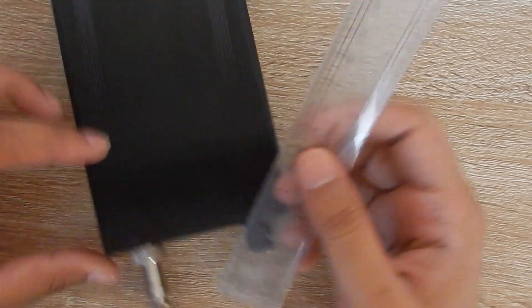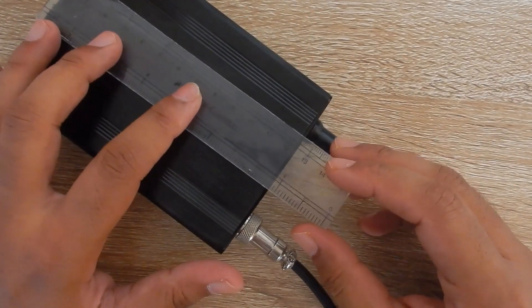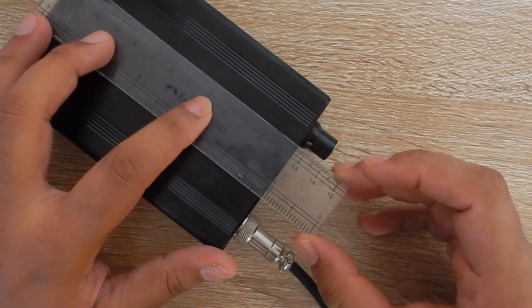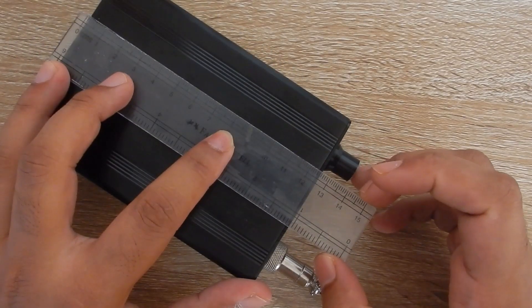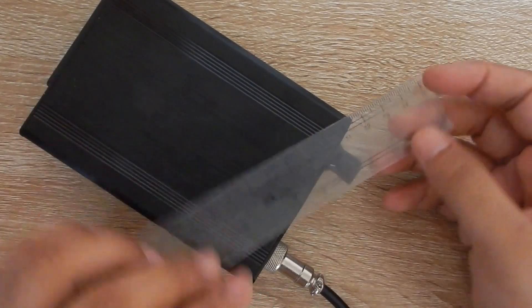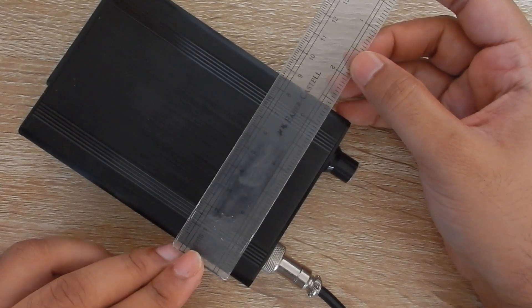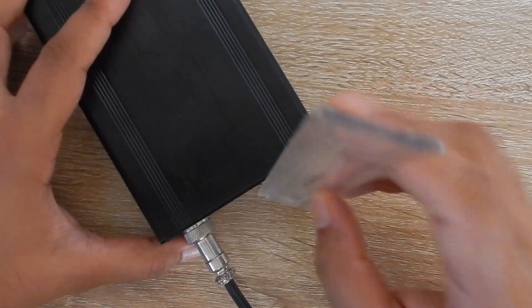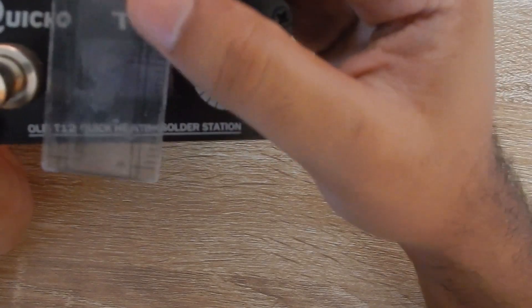It has an OLED display and one thing I like about the product is that the device is very compact. The length of the device is approximately 140 mm, the width is approximately 90 mm and the device is 40 mm deep.